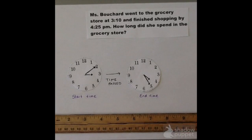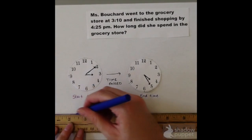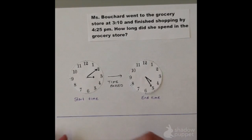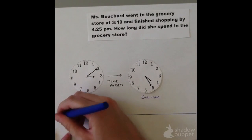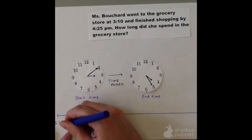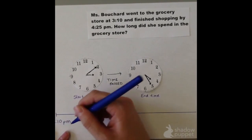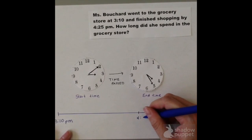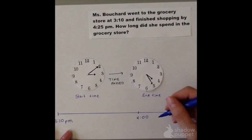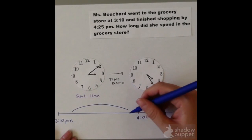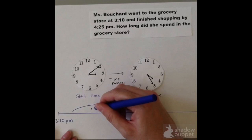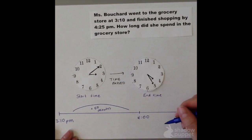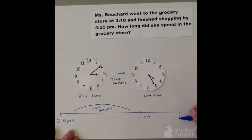One way that I can calculate the elapsed time is by adding up in chunks on an open timeline. I can start by plotting my starting point, which was 3:10. Then I'm going to think to myself, what could I add to 3:10 that would get me to the next hour, which would be 4 o'clock? Well, 50 is a friendly number, so if I add the 10 to 50, that's equal to the next available hour, which is 4 o'clock.